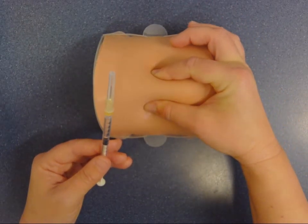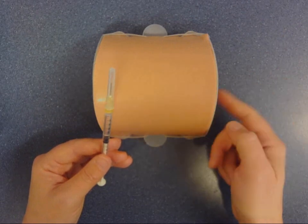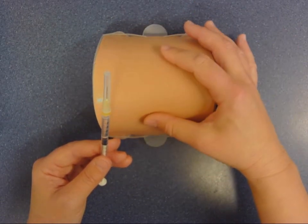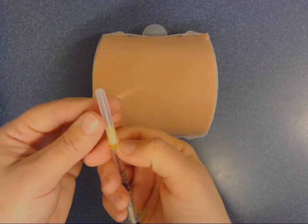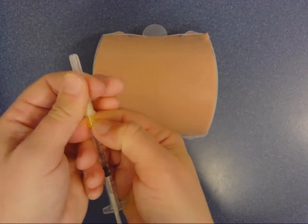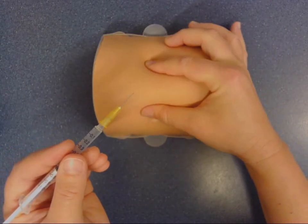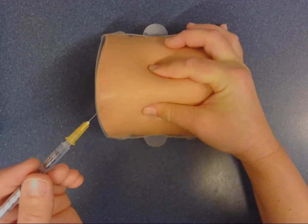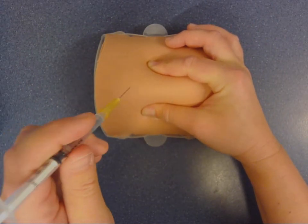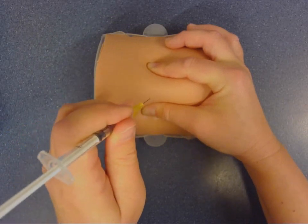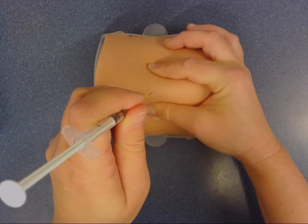I'm pinching the skin in order to separate the subcutaneous layer from the layer of muscle to ensure that I actually do inject into the layer of fat. So I'm going to pinch the skin with my non-dominant hand and I'm going to hold the syringe like a dart. And I'm going to inject the drug at a 90 degree angle.